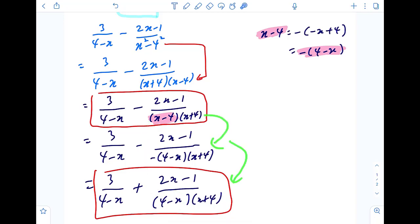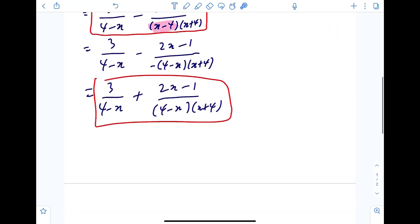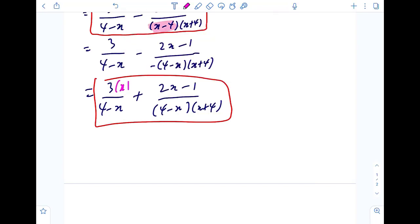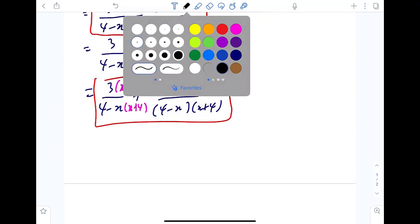Now compare the two denominators: 4 minus x, x plus 4. Over here only has 4 minus x, so what you need to do is times by x plus 4, x plus 4, so that denominators are the same.